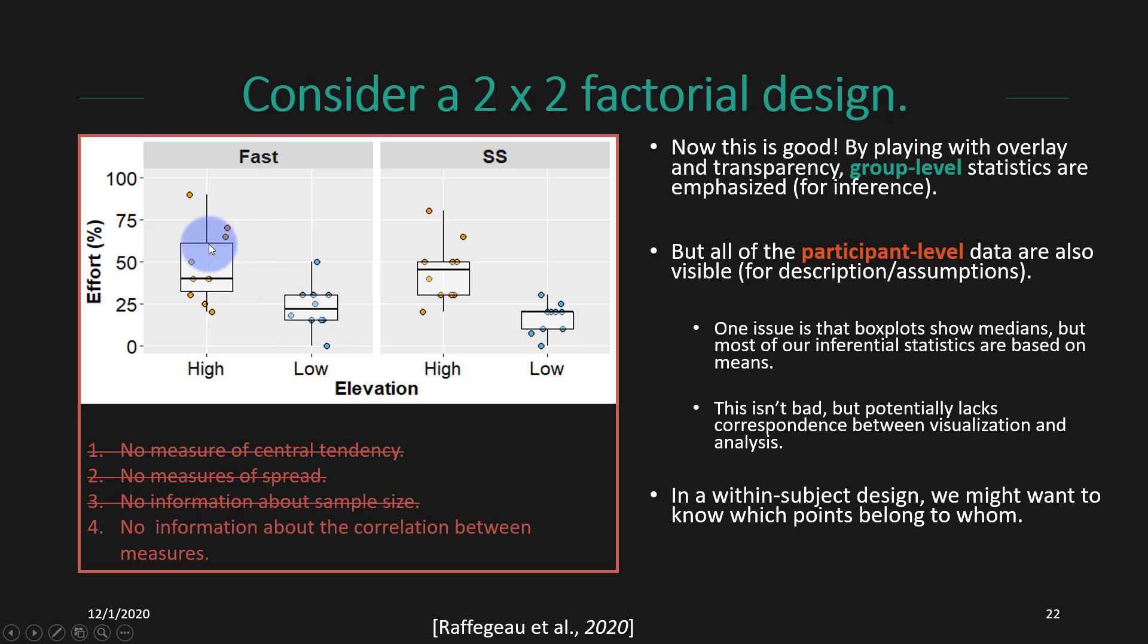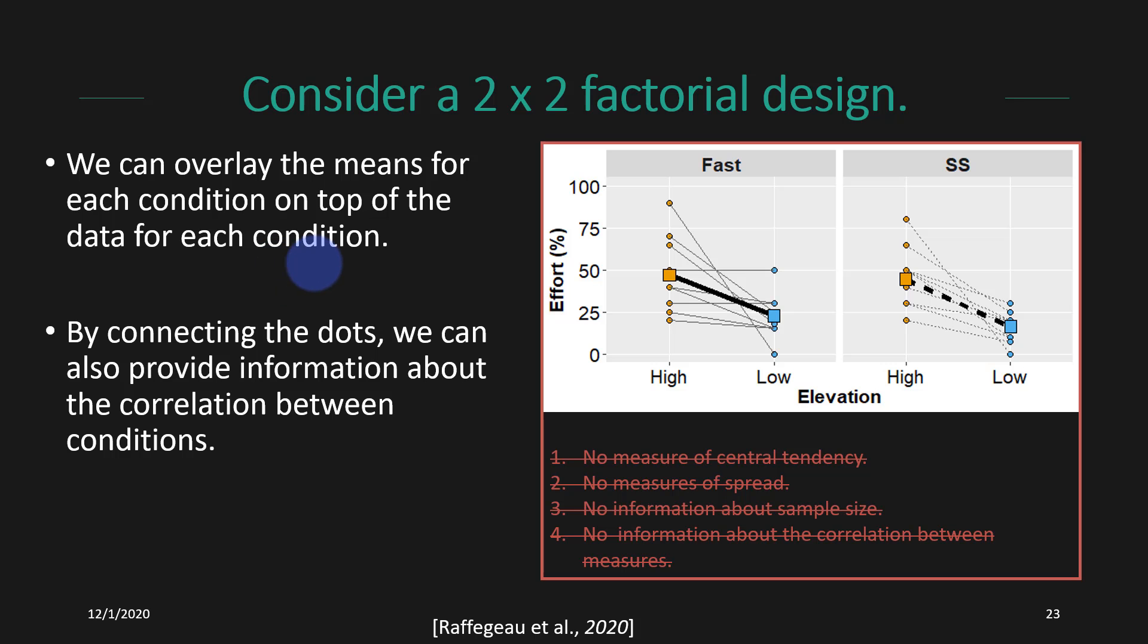But the one thing that could still be improved upon here is that this was a within subjects design. So we might like to know which data points belong to whom. Are the people who found the fast condition effortful also the people who found the low condition effortful? Or was there really no correlation in those things between conditions? As kind of a final step, what we can do is actually draw dots between those data points, and then we can overlay the means for the two conditions. This allows us to then see, here's the person who found the high condition the most effortful. They actually found the low condition the least effortful. So their effort changed a lot. We're showing all the data points so you get a sense of the spread, but we're also showing on average what the mean was in the high condition and what the mean was in the low condition as a function of whether it was the fast speed or the self-selected speed.